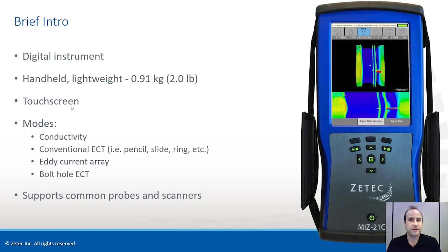The MIS-21C is a truly handheld and lightweight eddy current instrument. It has a touchscreen interface. You can use it to manipulate the data or navigate around the instrument using typical touchscreen gestures such as pinch and zoom. It supports all the traditional eddy current probes that you would expect, such as pencil probes, slide probes, conductivity probes, and rotating scanners. In addition, this is the first handheld eddy current instrument which supports eddy current array probes.